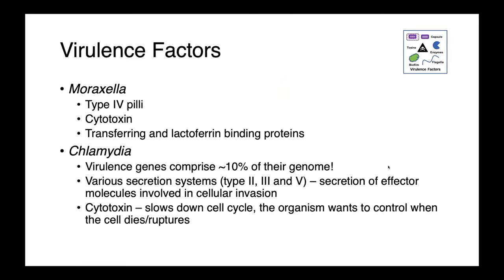Virulence factors in Chlamydia are a really important and large part of their genome. These organisms, as intracellular parasites, have become so dependent on their eukaryotic host that they've actually lost a lot of their genomes through the process of genome reduction. This has happened to such an extent that virulence genes comprise 10% of their genome. They produce various secretion systems — type 2, 3, and 5 — that allow them to secrete effector molecules involved in cellular invasion, as well as cytotoxins which allow them to slow down the cell cycle. The organism really wants to control when the cell dies or ruptures so that it's able to optimize its life cycle.